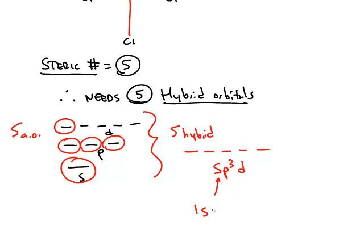s, because we mix together one s, three p's, and one d. One plus three plus one gives you a total of five hybridized orbitals. The other d orbitals are not mixed. They're not needed, so those are unhybridized atomic orbitals.